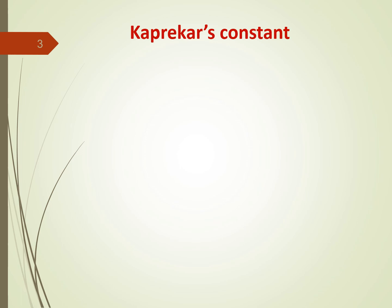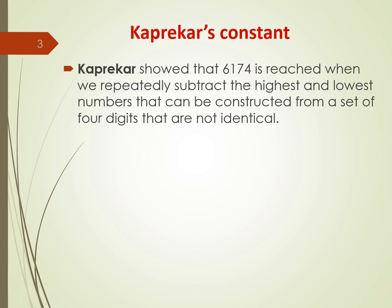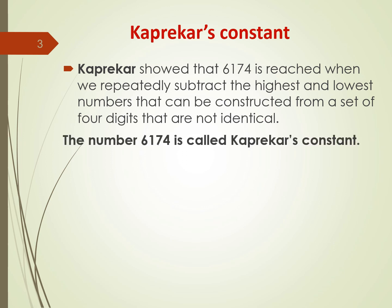As I mentioned earlier, Kaprekar's constant is his most famous discovery. Kaprekar showed that 6174 is reached when we repeatedly subtract the highest and lowest numbers that can be constructed from a set of 4 digits which are not identical. This number, 6174, is called Kaprekar's constant.